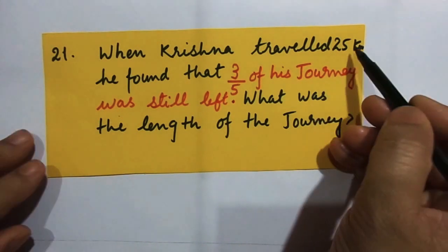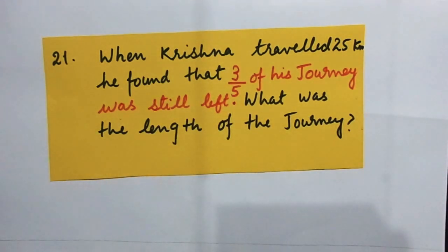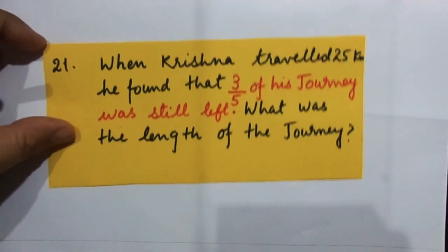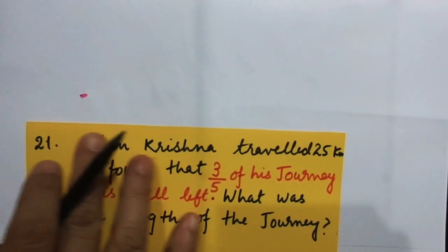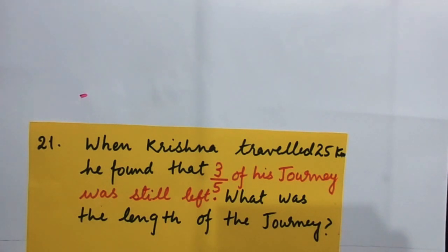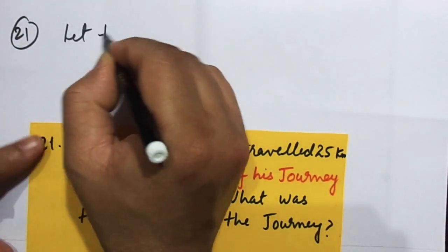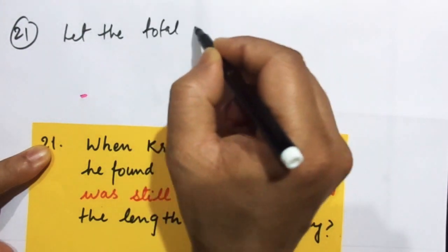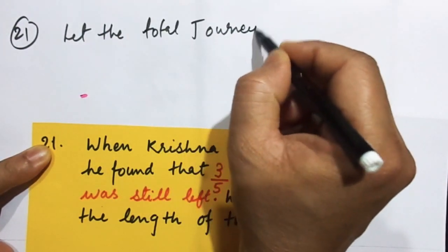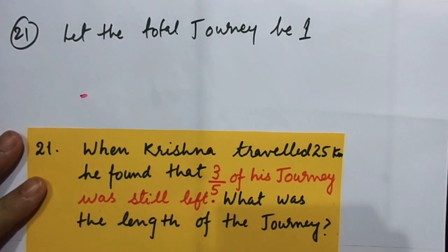Question 21: Krishna travels 25 kilometers and then finds that 3 by 5 of his journey was still left. This is a continuation with the previous style. So the fraction of journey left is equal to 3 by 5. Let the total journey be 1.